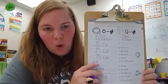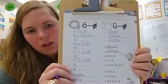Number 19 is globe. I hear O consonant E. And this is a picture of a globe.